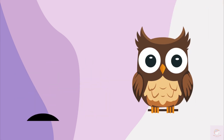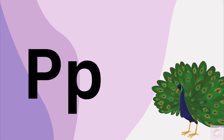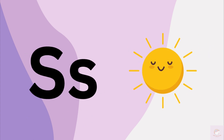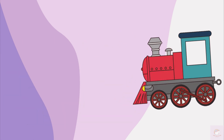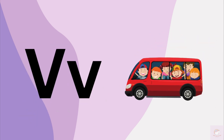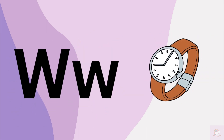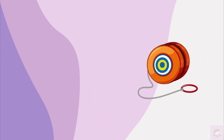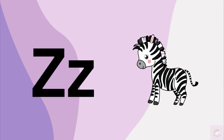O for owl, P for peacock, Q for queen, R for rose, S for sun, T for tree, U for umbrella, V for van, W for watch, X for x-ray, Y for yo-yo, Z for zebra.